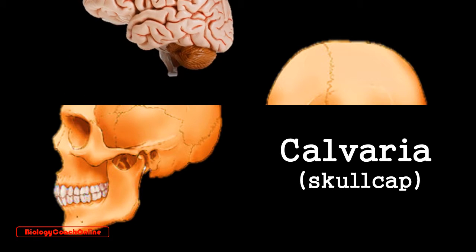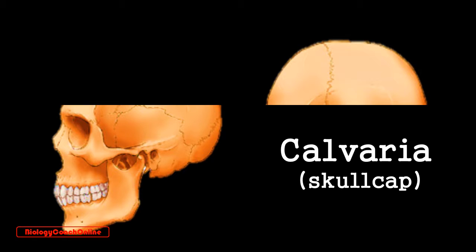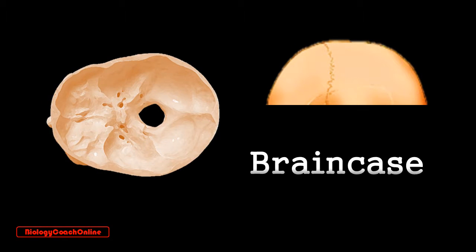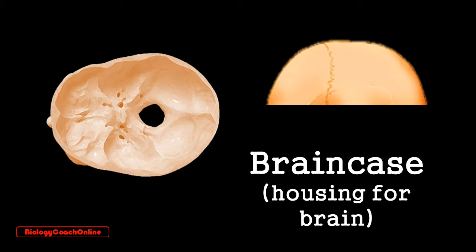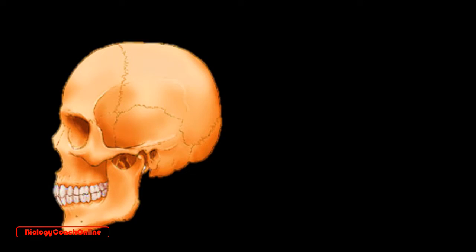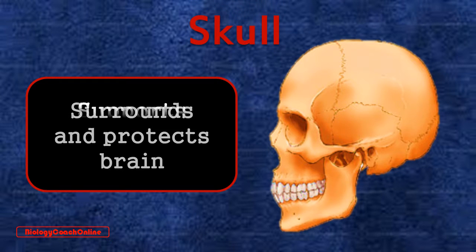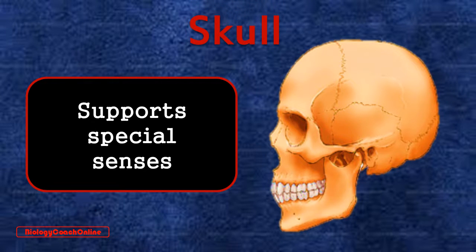Now if you get rid of the brain — no disrespect to your brain of course, as we will revisit it a little later — then we can look into the brain case. That's the space in the cranium that houses the brain. Now the head is also where you will find your special senses: vision, hearing, taste, and smell. So the two main purposes of the skull are to surround and protect the brain, and to support the structures of the special senses.